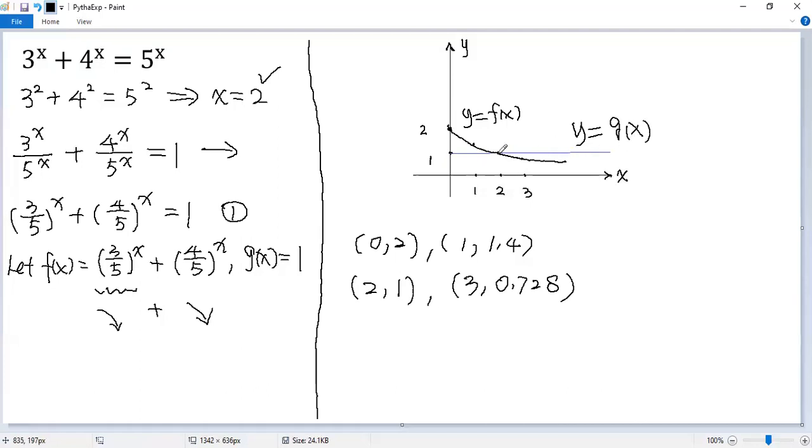So you see, there's only one intersection: (2, 1). That means the given equation has a unique solution x equals 2.